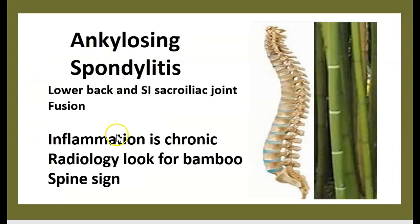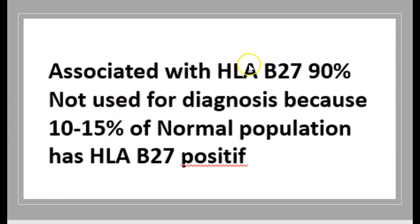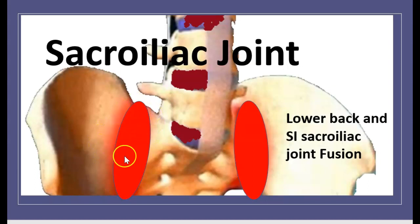Most autoimmune diseases are predominant in women, but ankylosing spondylitis is an exception. It is associated with HLA-B27 in 90% of cases. However, HLA-B27 is not used for diagnosis alone because 10 to 15% of the normal population also carries HLA-B27. Key features include sacroiliac joint pain and fusion.